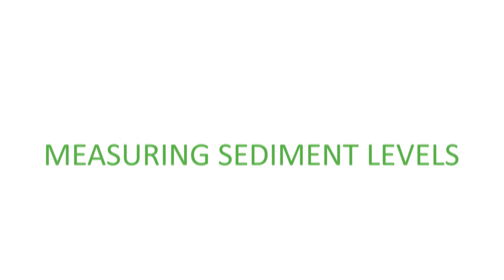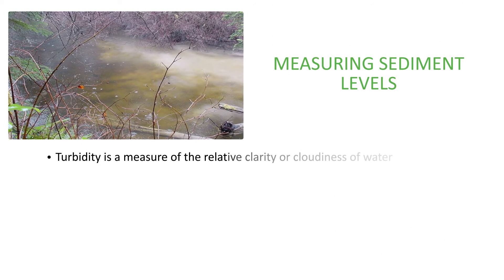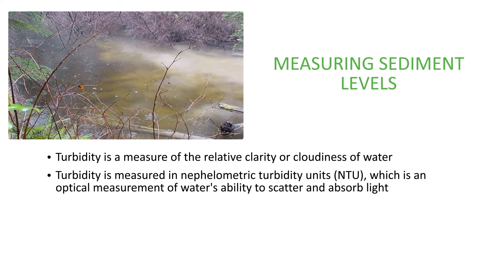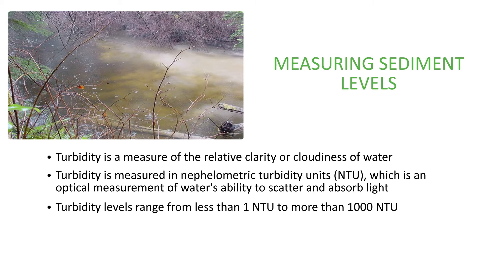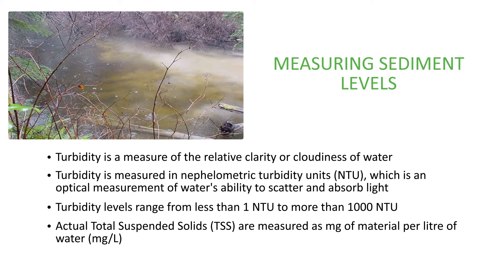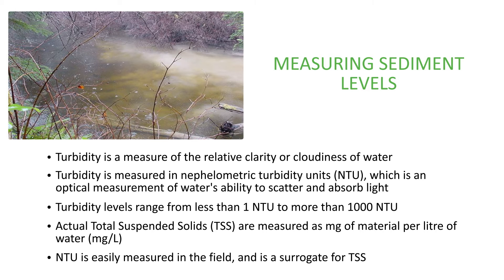Measuring sediment levels. Turbidity is a measure of the relative clarity or cloudiness of water. Turbidity is measured in Nephelometric Turbidity Units, or NTU, which is an optical measurement of water's ability to scatter and absorb light. Turbidity levels range from less than one NTU to more than 1,000 NTU. Actual total suspended solids, TSS, are measured as milligrams of material per liter of water. NTU is easily measured in the field and is a surrogate for total suspended solids.